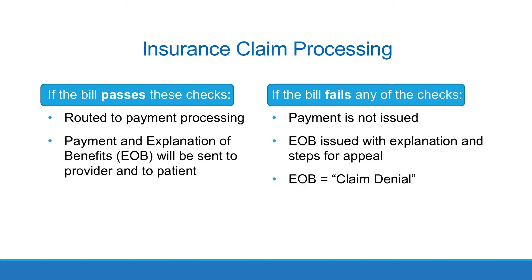If the bill passes these checks, the claim is routed to payment processing, from where the insurer will send payment and an explanation of benefits (EOB) to the provider's office and an EOB to the patient. If the bill fails any of the checks, the insurer does not issue payment but does provide an EOB to the provider and patient explaining why no payment has been issued. In this case, we commonly refer to the EOB as a claim denial.